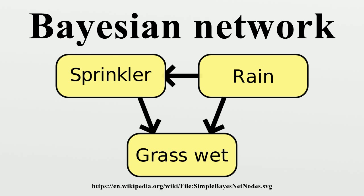Type 1 and type 2 represent the same dependencies and are therefore indistinguishable. Type 3, however, can be uniquely identified, since the endpoints are marginally independent and all other pairs are dependent. Thus, while the skeletons of these three triplets are identical, the directionality of the arrows is partially identifiable. The same distinction applies when nodes have common parents, except that one must first condition on those parents. Algorithms have been developed to systematically determine the skeleton of the underlying graph and then orient all arrows whose directionality is dictated by the conditional independencies observed.